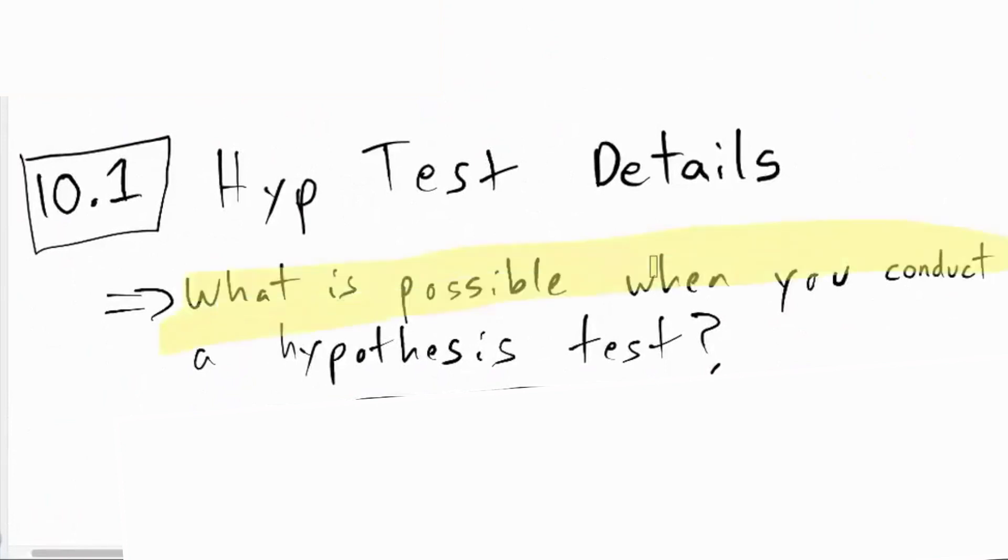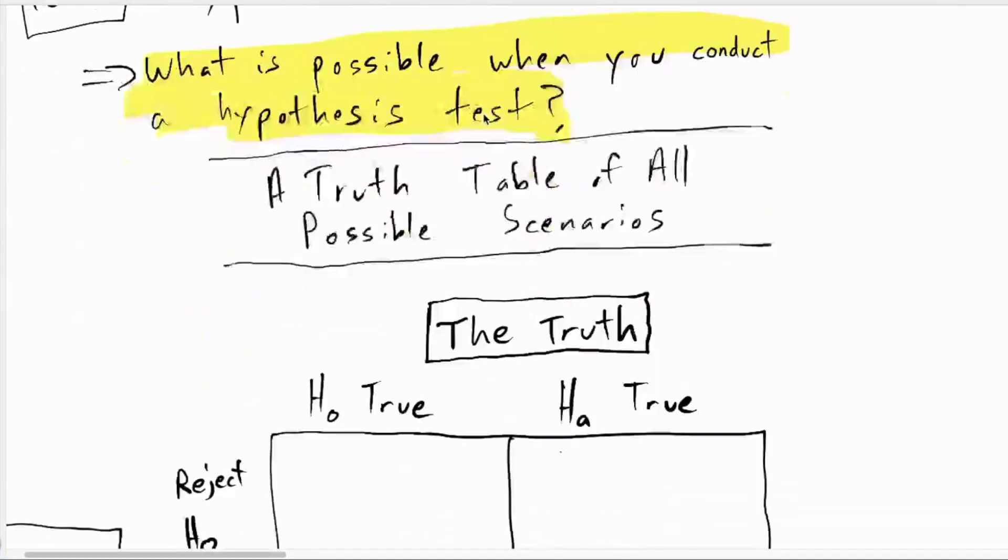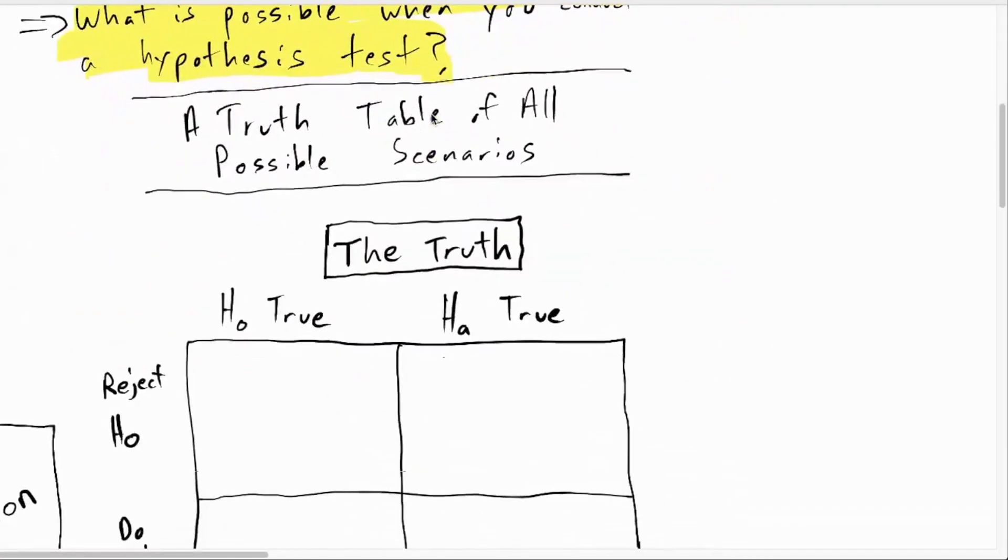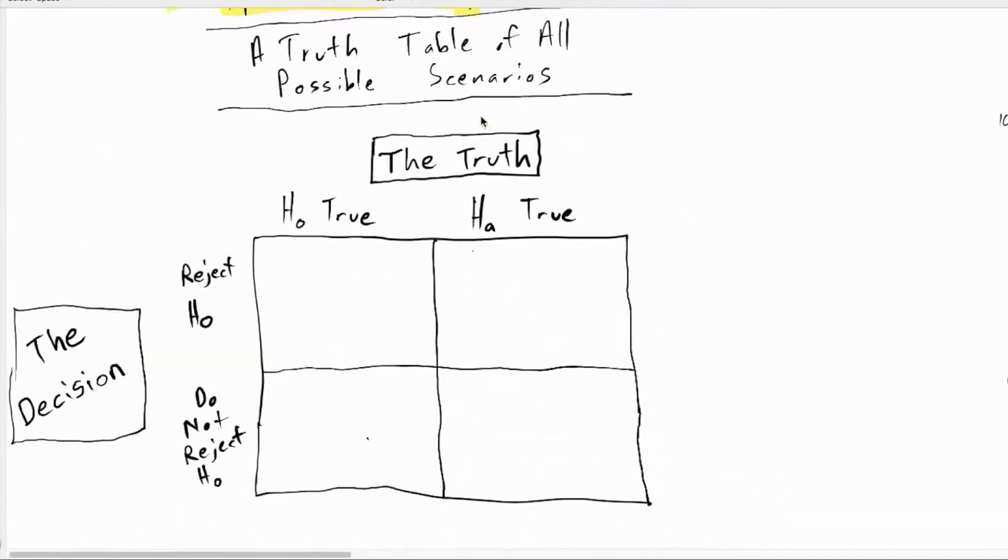When you do a hypothesis test, what could happen? What are all the possible ways this thing could go down? A really nice way to describe that is what's called a truth table.